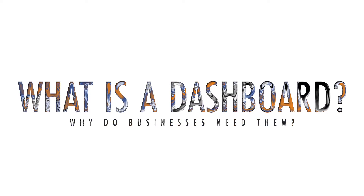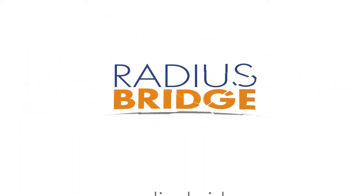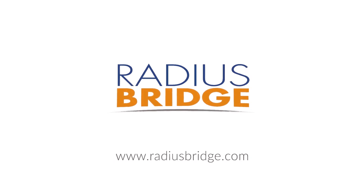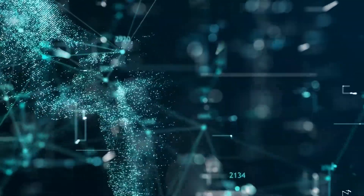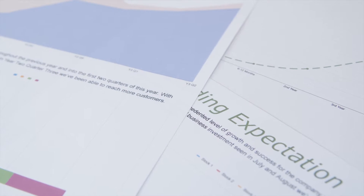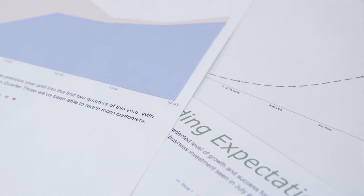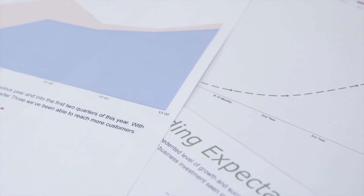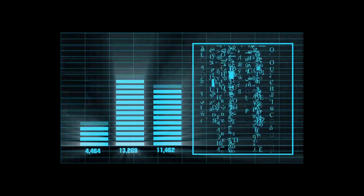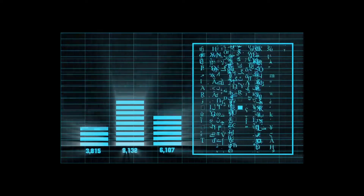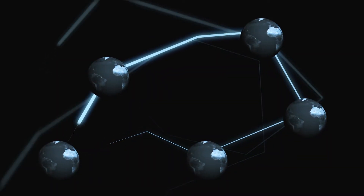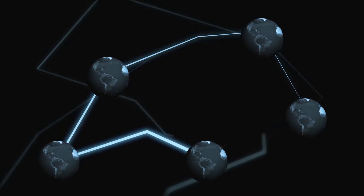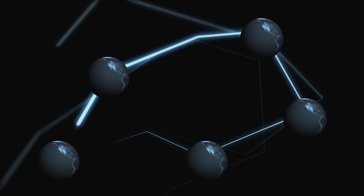What is a dashboard and why do businesses need them? Dashboards provide data in the form of a graphical user interface. Key performance indicators, or KPIs, are typically displayed in easy-to-read graphs. Dashboards are usually displayed as a webpage and provide real-time data that is constantly updated. Real-time data is available because dashboards are linked to databases where the raw data is stored.